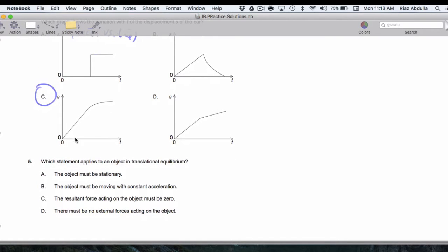Question number five, translation equilibrium. This is another way of saying balanced forces. For forces to be balanced, you can be moving and balanced. You can have forces applied and be balanced. If you're moving with constant acceleration, you're not balanced, so it's really choice C. The resulting force acting on the object must be zero, meaning that the forces add up to zero. That's what balanced means.